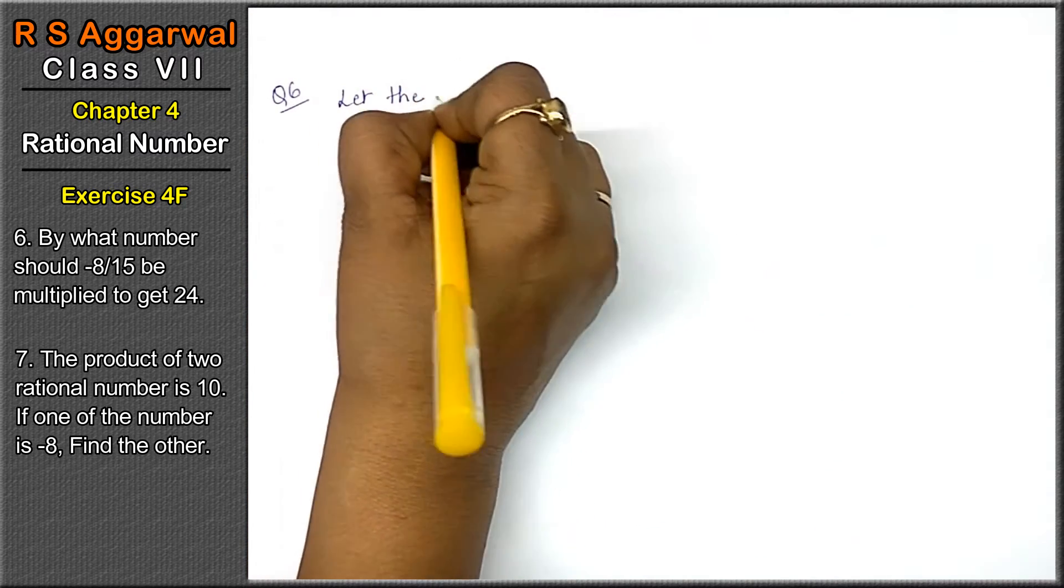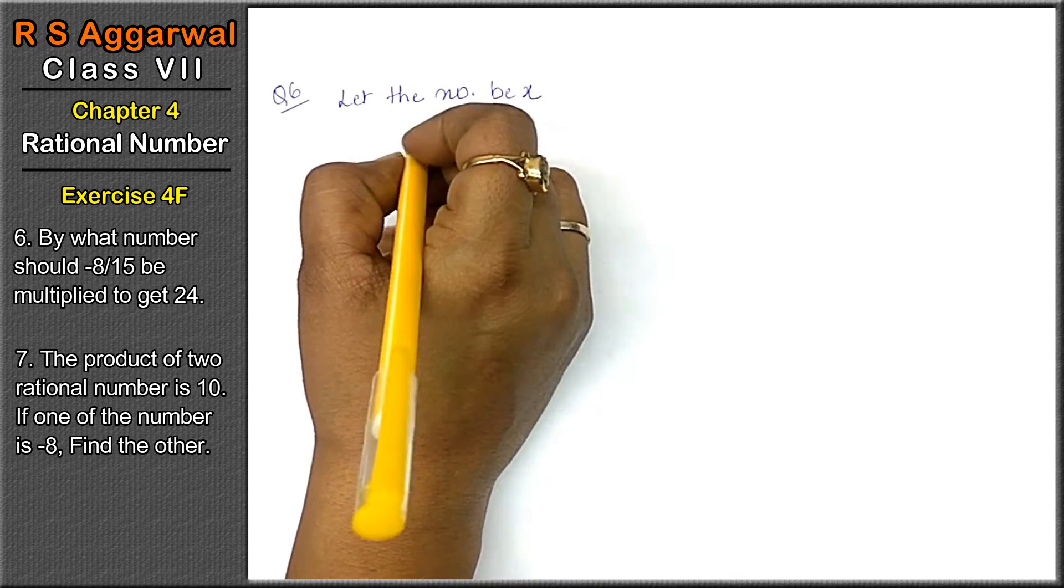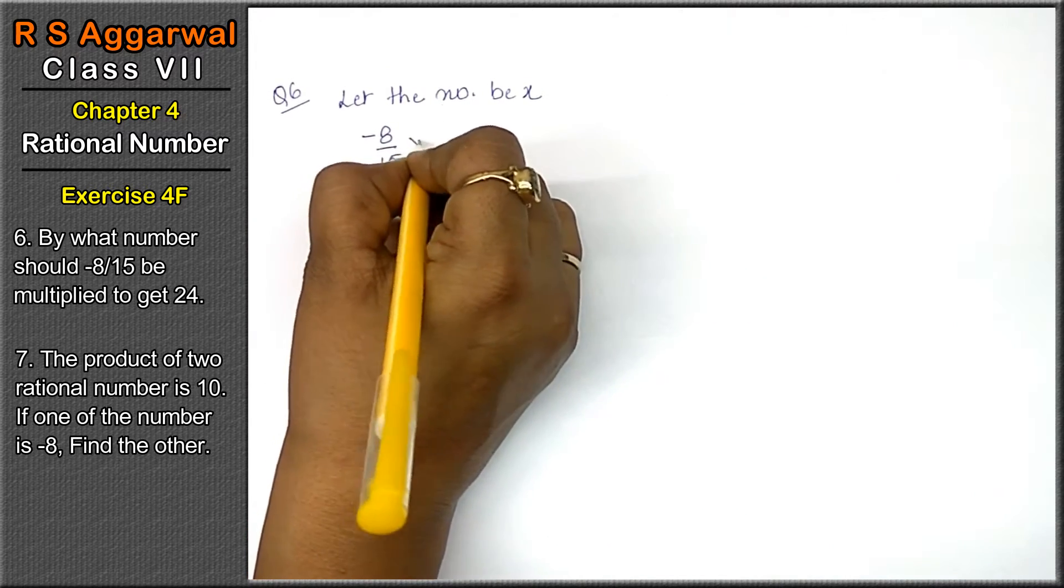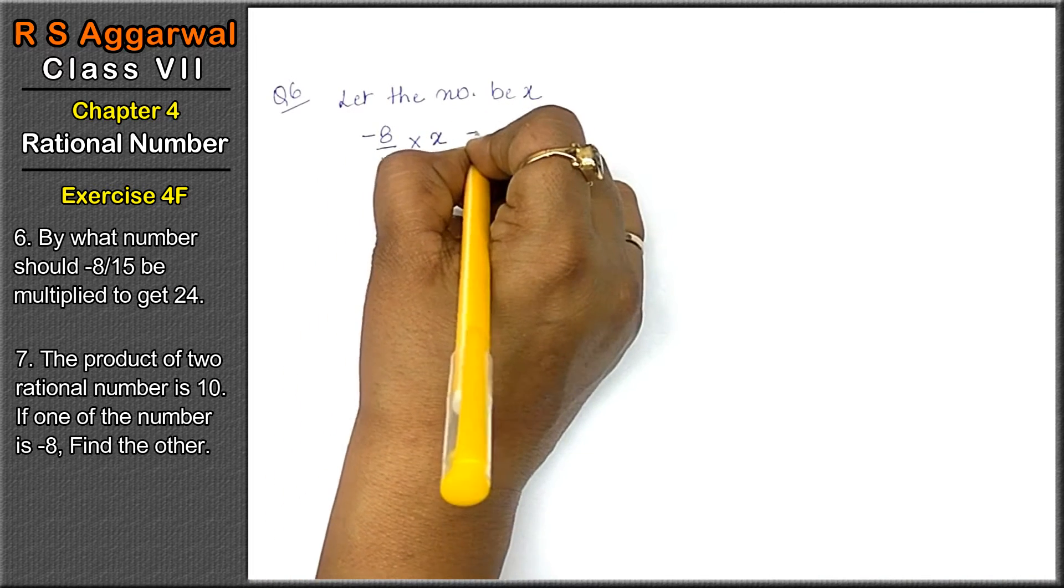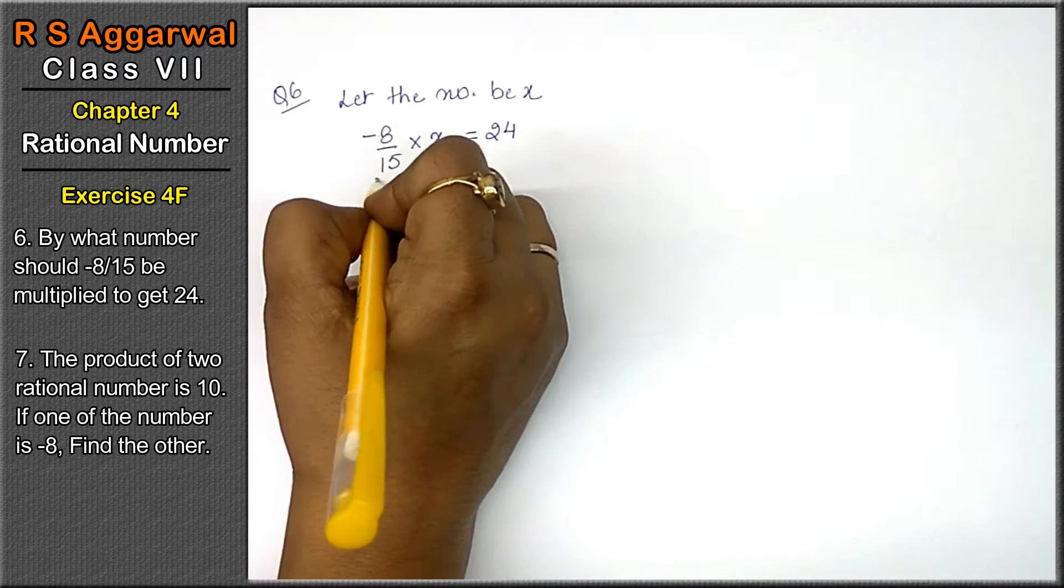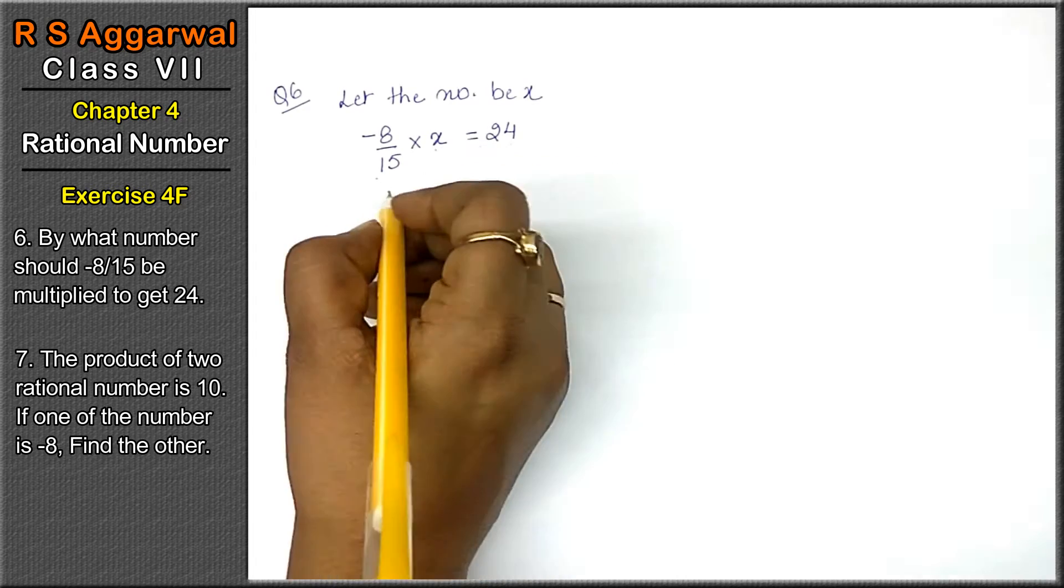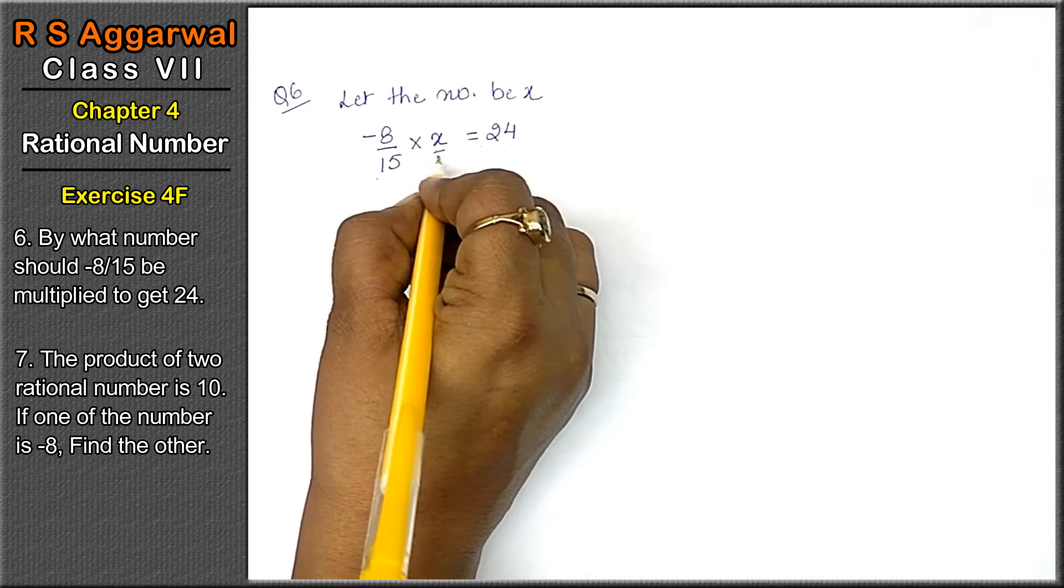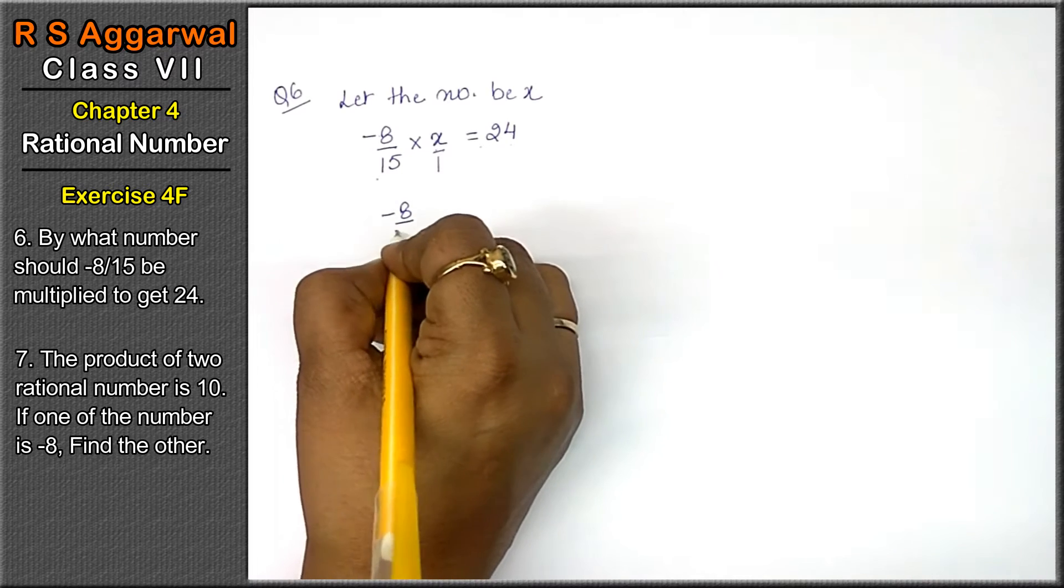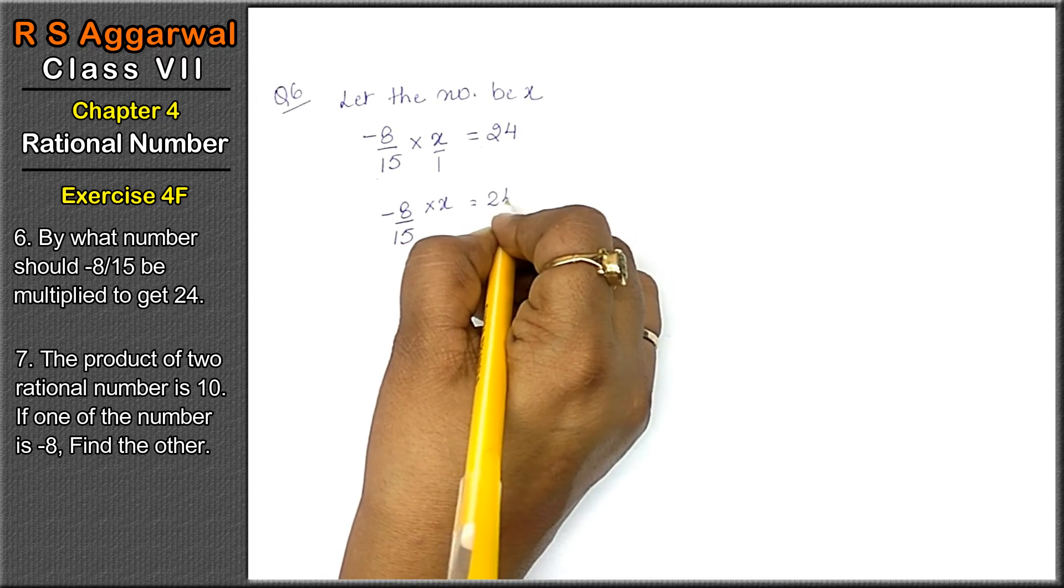First, let the number be x. By what number should minus 8 upon 15 be multiplied to get 24? Minus 8 upon 15 ko kis number se multiply karein to get 24? Now, x ke niche kuch nahi hai, 1 maana jayega. To minus 8 upon 15 into x equals to 24 as it is.